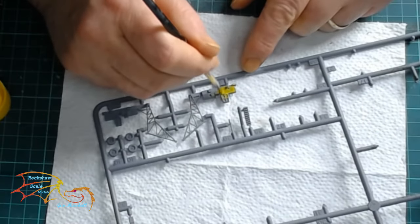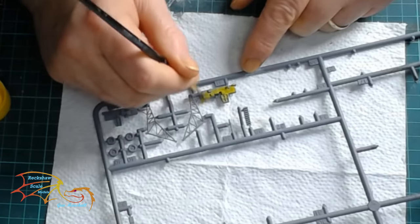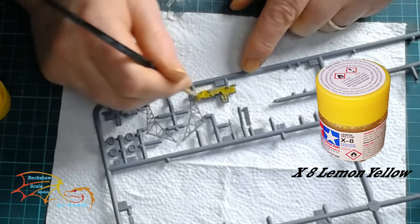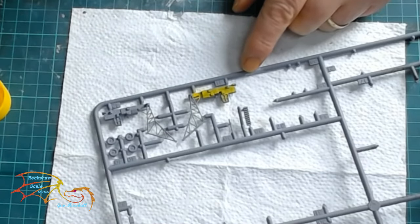Starting off with these support vehicles, I'm painting these on the sprue using Tamiya's X8 Lemon Yellow. These are going to need at least 2 to 3 coats, possibly more. The initial coats are going down now.